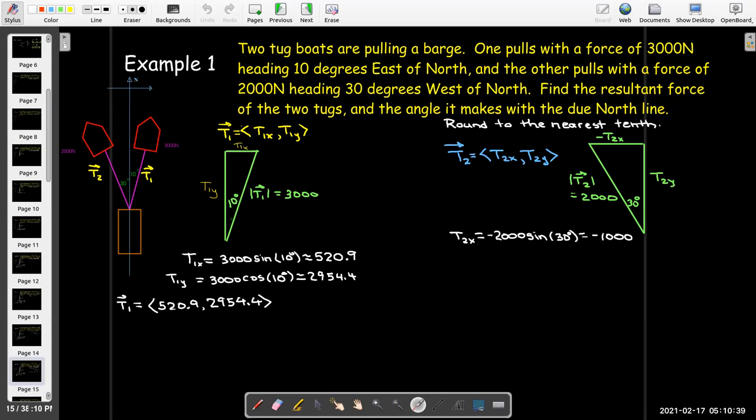In order to find this horizontal component that's opposite, I'm going to take the hypotenuse times the sine of 30 degrees, but because it is going in the negative direction, I have to remember to add the negative sign to it. Sine of 30 degrees is just a half, so I get a nice round number of negative 1,000. For the vertical component, I'll use cosine, and it's radical 3 times 1,000, which is about 1,732.1.